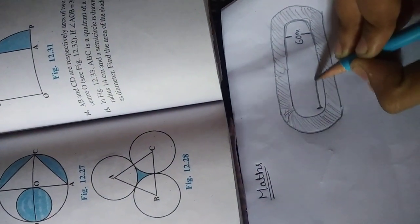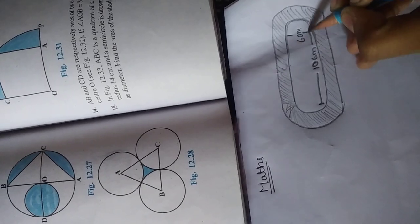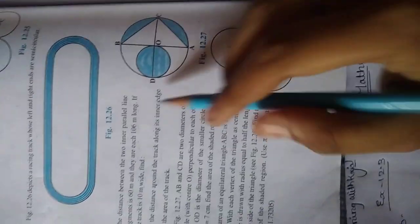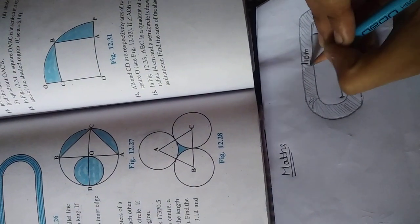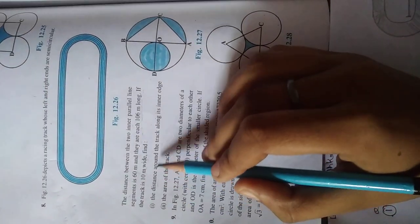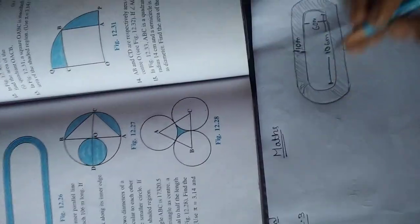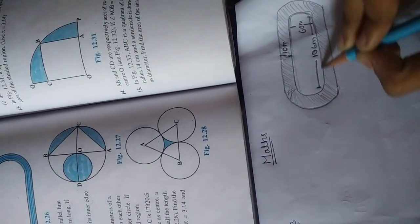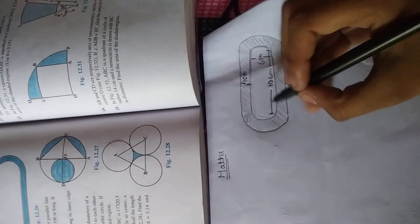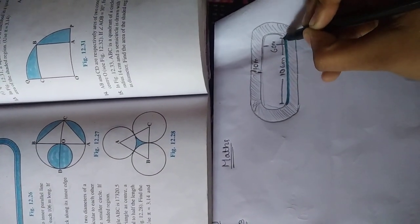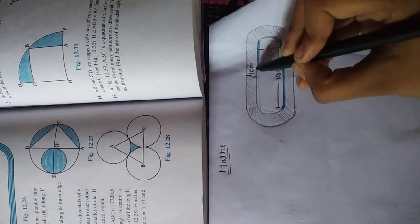The track is 10 meters wide. First question given: find the distance around the track along its inner edge. We find the inner edge - what is inner edge? This is inner edge, we find this edge. Let's start. Take first, this is 106, this also is 106.